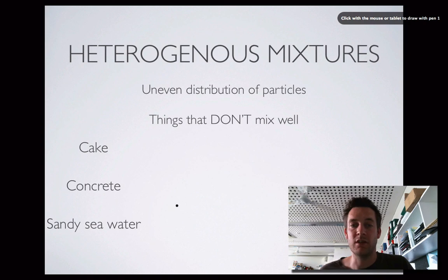Sandy seawater is another example of a heterogeneous mixture. If we had just seawater with no sand there, then the salt would be evenly distributed amongst the water particles. But as soon as you have sandy seawater, because that sand can't dissolve in the seawater, depending on where you are in this mixture, it will appear either sandy or not sandy. So, it would be called a heterogeneous mixture.